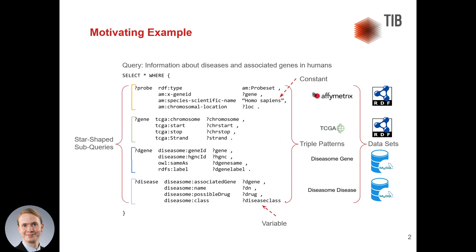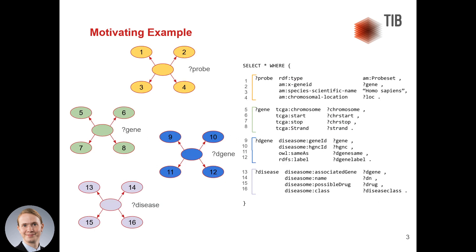This query can be decomposed into four star-shaped subqueries. A star-shaped subquery is formed around the subject of the triple patterns, representing a class of instances that share the same properties.